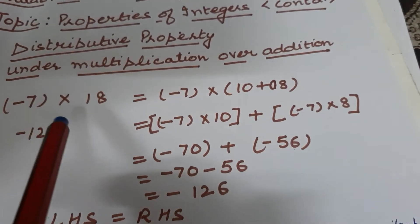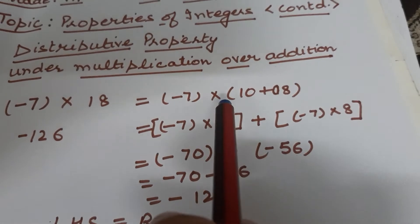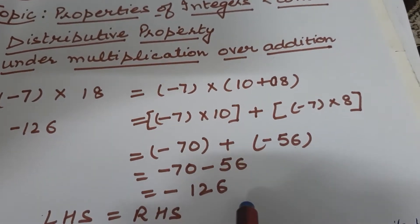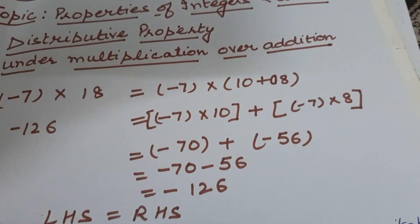So it means to make our product, to make our calculation easy, we can follow the distributive property. There will be no difference in the answer. Answers will be the same.